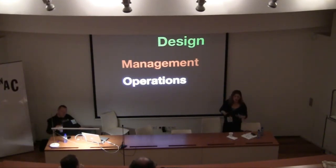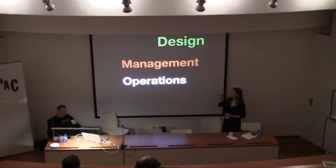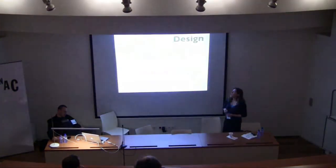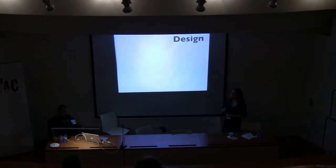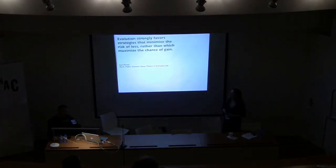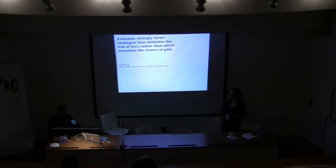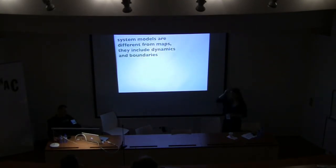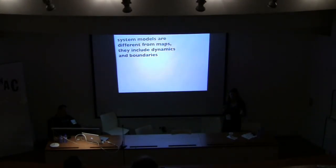In system management, there are a couple of different places where modeling is used. The three key ones are: design of systems, management of systems, and ongoing operation of systems. Starting with design — this is where I like to include a systems theory, system-based approach. When you're designing a system, you want to have an idea of the inputs, the processes, and the outputs.